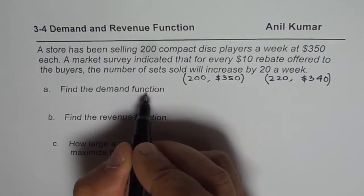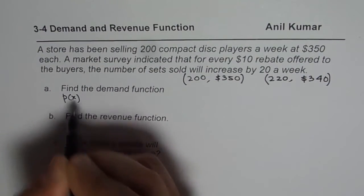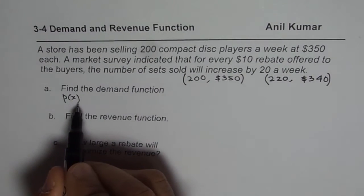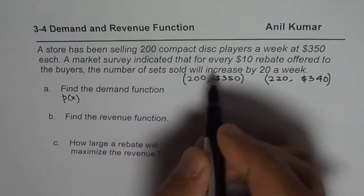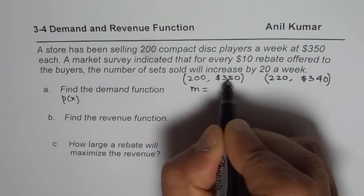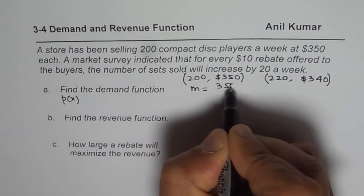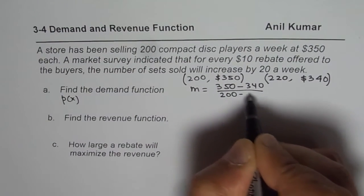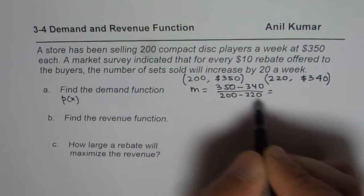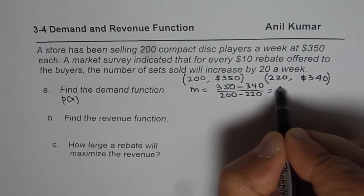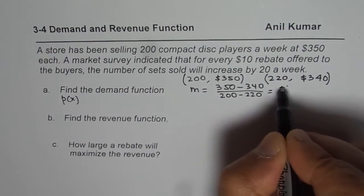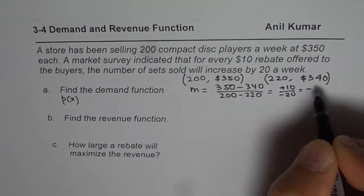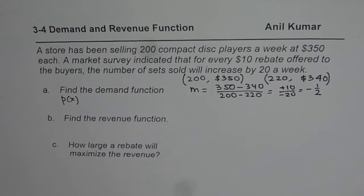The slope is (y2 - y1) / (x2 - x1) = (350 - 340) / (200 - 220). The numerator is 10 and the denominator is -20, giving us a slope of -1/2. So that is the rate at which price changes with respect to quantity sold.